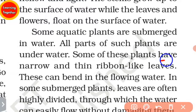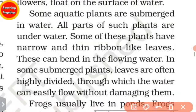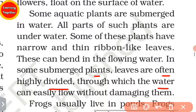Some of these plants have narrow and thin ribbon-like leaves that can bend in the flowing water. In some submerged plants, leaves are often highly divided, through which the water can easily flow without damaging them.